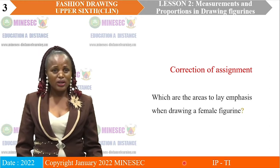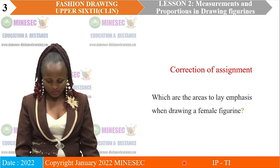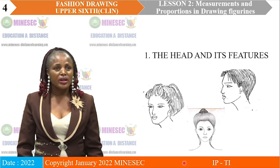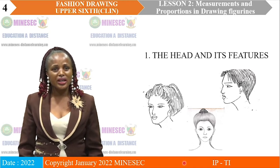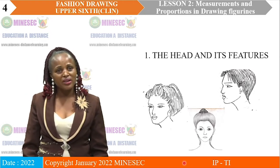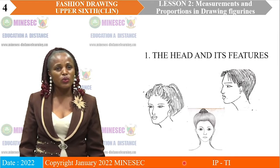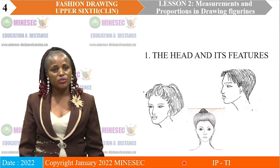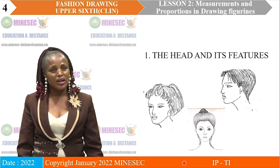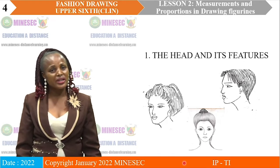When we are drawing our figurine, we have to lay emphasis on the head of the figurine and on the fingers of the figurine. Right now we are going to see the head and its features. Looking at the profile view, the way the hairs are arranged on the profile view head is different from the way the hairs are arranged on the front view. We also have the three-quarter view face and the way the hairs are arranged — it is not the same.